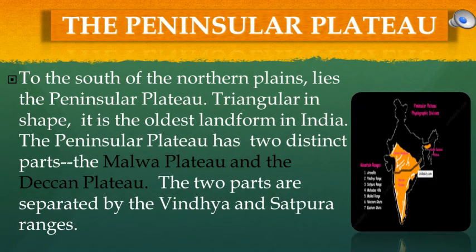To the south of the Northern Plains lies the Peninsular Plateau. Triangular in shape, it is the oldest landform in India. The Peninsular Plateau has two distinct parts: the Malwa Plateau and the Deccan Plateau. The two parts are separated by the Vindhya and Satpura Ranges.